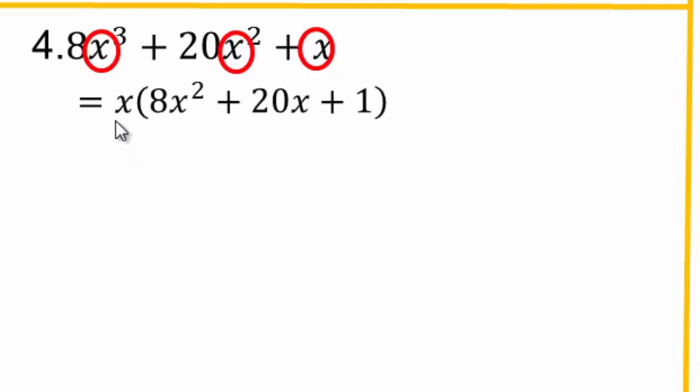For the next one, x is the greatest common factor. After factoring it out, consider: will this process always give you factors? We have 8x squared times 1 giving 8. Two numbers multiplying to give 8 and adding to give 20 — is that possible? Numbers multiplying to 8 are 1 and 8 (sum = 9) or 4 and 2 (sum = 6). The largest possible sum is 9, so 20 is not achievable. This is an irreducible polynomial — it does not factor anymore, and that is the final answer.